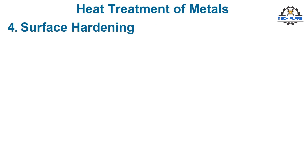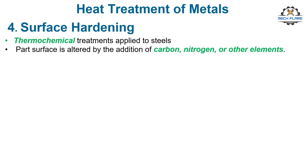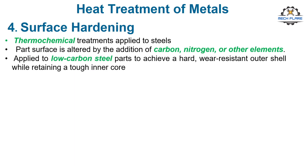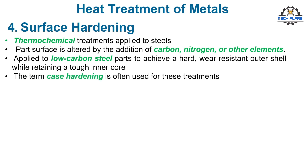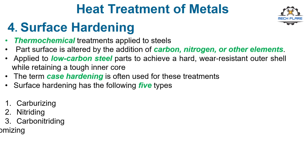Surface hardening refers to any of several thermochemical treatments applied to steels, in which the composition of the part surface is altered by the addition of carbon, nitrogen, or other elements. These processes are commonly applied to low-carbon steel parts to achieve a hard, wear-resistant outer shell while retaining a tough inner core. The term case hardening is often used for these treatments. Surface hardening has the following five types: 1. Carburizing, 2. Nitriding, 3. Carbonitriding, 4. Chromizing, 5. Boronizing.